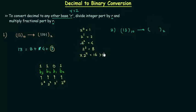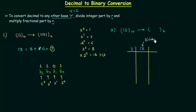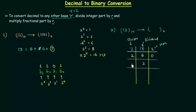Now we have to divide 13 by 2. 13 is the dividend and 2 is the divisor. When we divide 13 by 2 we get quotient 6 and remainder 1. We again divide the quotient by 2: result is 3 with remainder 0. We continue — divide 3 by 2: quotient is 1, remainder is 1. Divide 1 by 2: quotient is 0, remainder is 1. We repeat the process until the quotient equals 0.